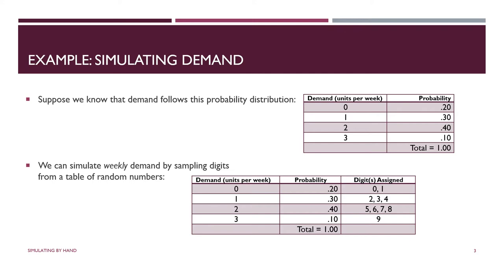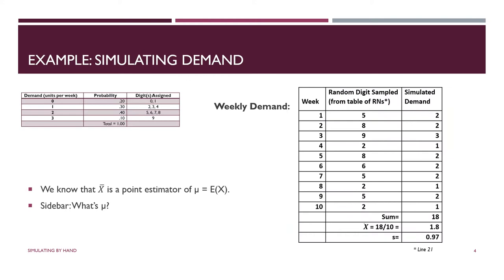Now we just need a way of generating random digits. When we do that for the first week, suppose we get a 5. We look up in the table and we see that for that particular week, demand must be 2. Continuing over 10 weeks, you can see the randomness — the random digit sampled, let's say from a table of random numbers, could have been generated in any way. The first week the number was 5, so demand was 2. The second week, the random digit was 8. The third week, 9. Each one of these random digits ends up translating to simulated demand, as you can see in the right column.